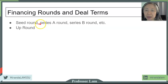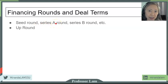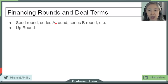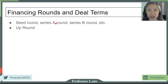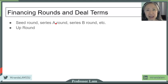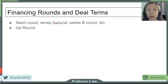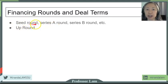Each time a company goes to seek money from the outside when it is private, it is re-evaluating its market value. Unlike a public firm where the stock is traded every single second on the stock exchange and a new market price is established each time the stock is traded, a private firm is traded only when it goes for new financing.